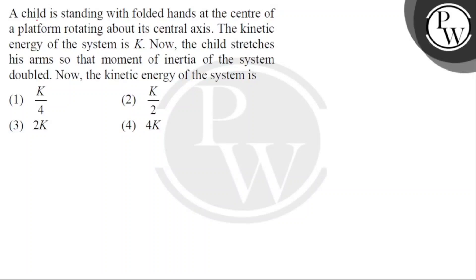Now let's read the question. A child is standing with folded hands at the center of a platform rotating about its central axis. The kinetic energy of the system is K. Now the child stretches his arm so that moment of inertia of the system is doubled.